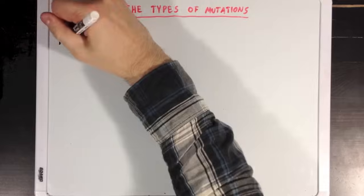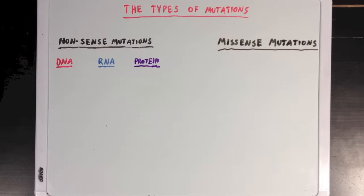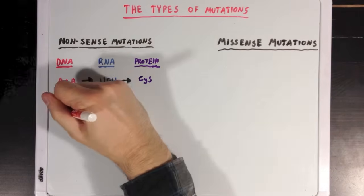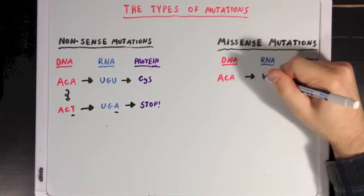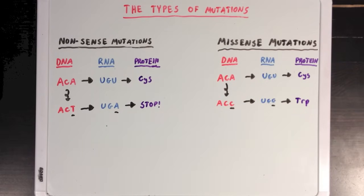Now, our next type of mutations are nonsense mutations and missense mutations. Let's say we have a DNA sequence that normally generates RNA and codes for a cysteine amino acid. A nonsense mutation is any genetic mutation that leads to the RNA sequence becoming a stop codon instead. Now, missense mutations are a little different, and they're any genetic mutation that changes an amino acid from one to another. So in this example, our mutation is changing the resulting amino acid from a cysteine to a tryptophan.